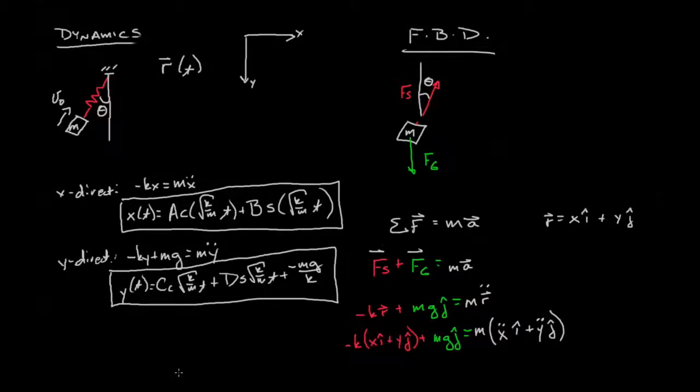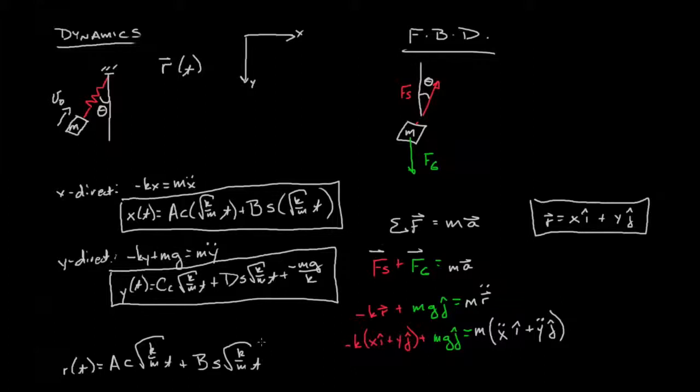This is the brilliance of vectors that when we resolve things into their x and y components we can treat them truly independently. Our final step is when we want to find position as a function of time, we simply combine our components and we get something like this: A cosine square root of k over m t plus B sine square root of k over m t i plus that whole thing again with different coefficients in the y direction.